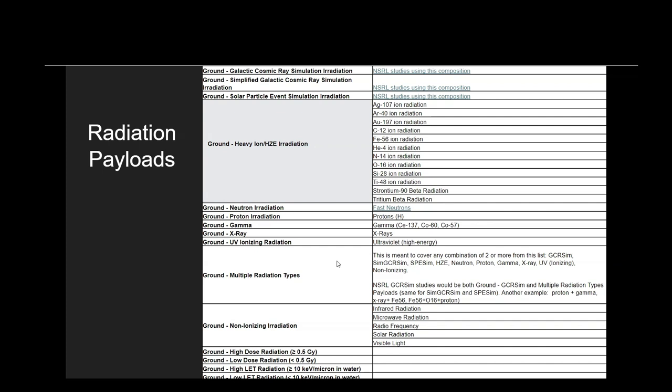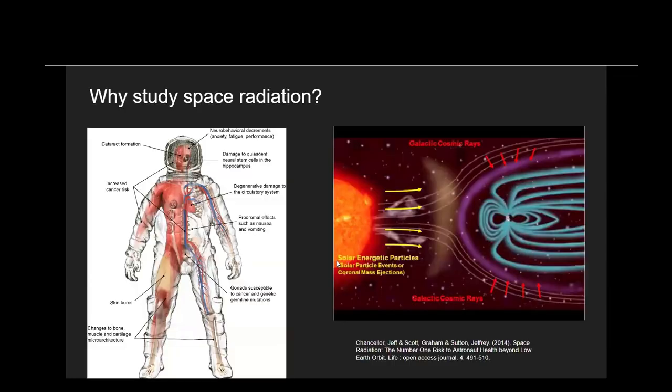To clarify why we chose these specific radiation payloads, I want to give a brief summary of space radiation. Space radiation puts astronauts at an increased risk for radiation sickness, central nervous system effects, and an overall lifetime increased risk of cancer. Future missions intend to leave low Earth orbit, which means we're leaving the protection of both Earth's atmosphere, which protects us from X-rays and gamma rays, as well as Earth's magnetic field, which shields us from cosmic rays and charged solar particles.